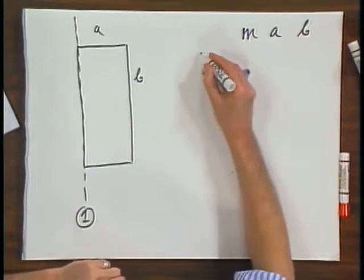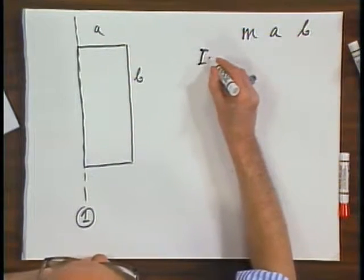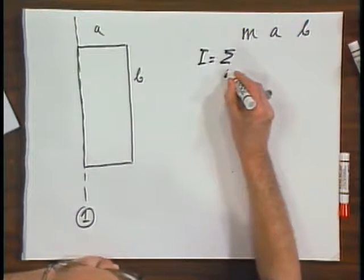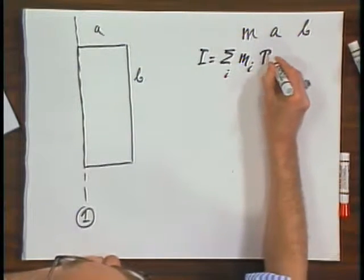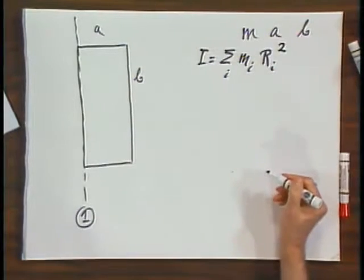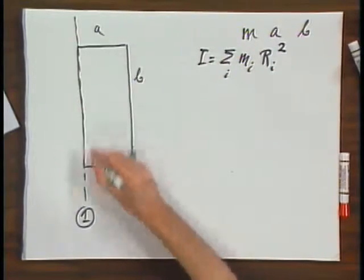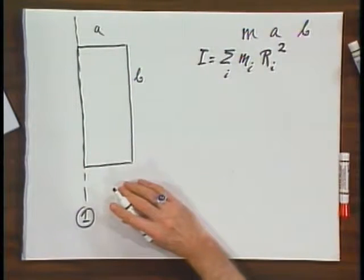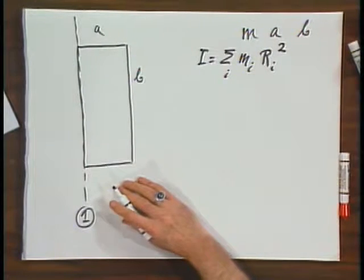Well, I now have to add up all these mass elements, M of i, multiply them by their distances to the axis of rotation, and since this is a continuous mass distribution, I have to use an integral.